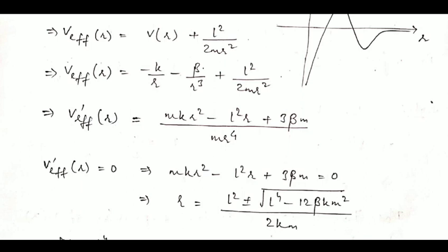We want this quadratic equation to have no real roots, so there is no maxima or minima of the effective potential. This is only possible if the discriminant of the quadratic equation is negative.